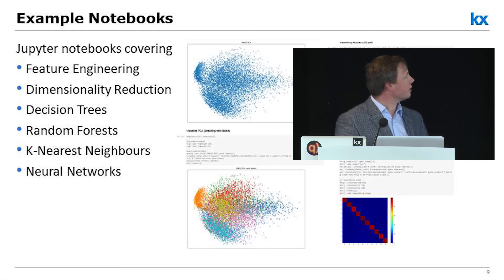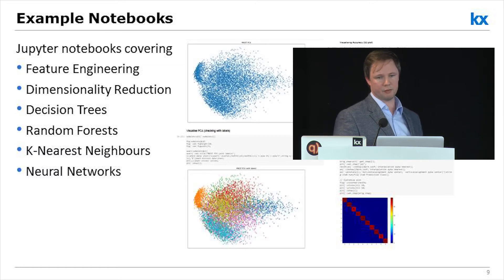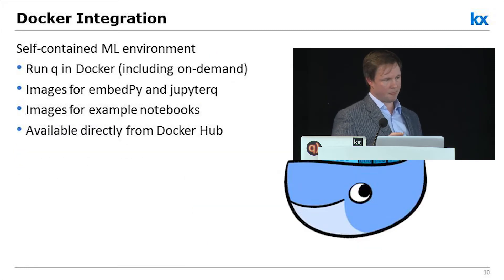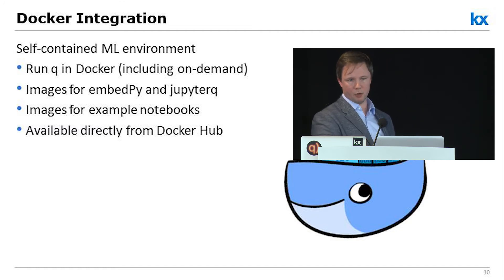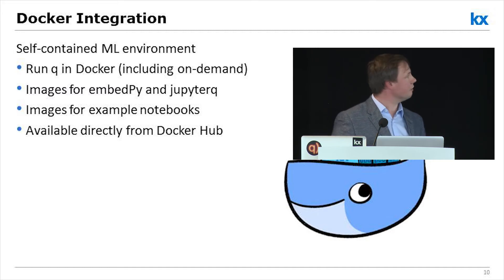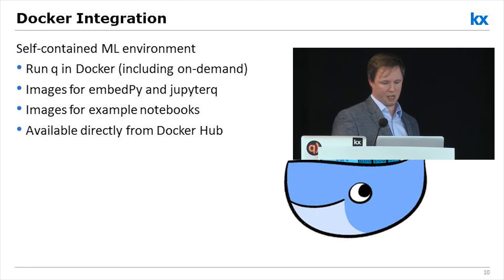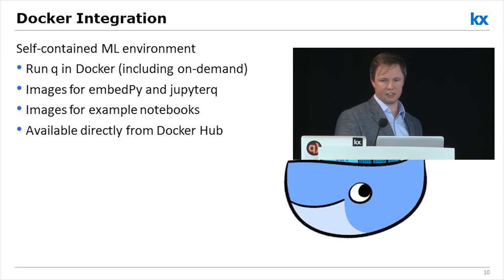The other thing we're releasing today is a complete self-contained machine learning environment that will run inside Docker. The containers will wrap up Q, EmbedPy, and JupyterQ — and in fact the notebooks I just mentioned. They are available directly from Docker Hub. In addition to a full license, the Docker instance will work with your on-demand license, so you can spin up a whole bunch of dynamic Docker instances of Q and do your machine learning workflow that way.